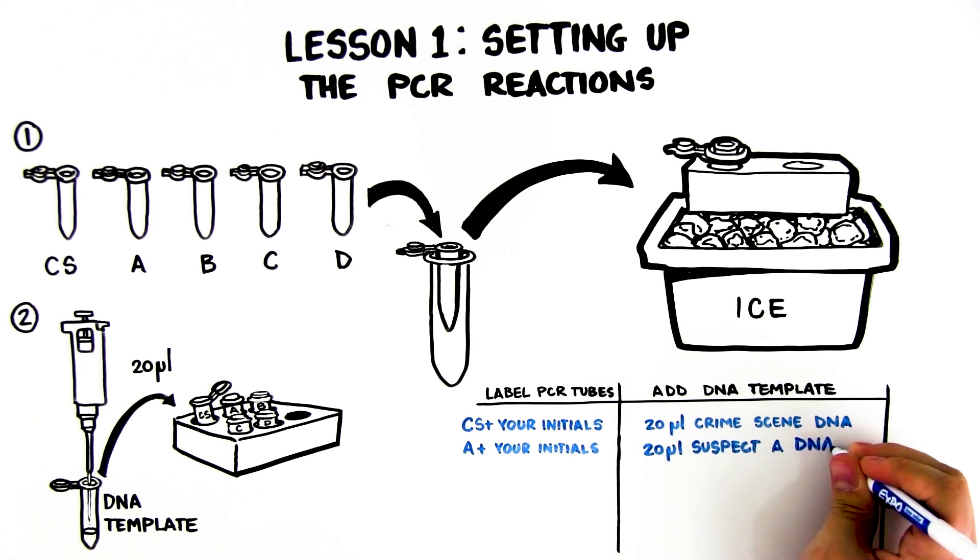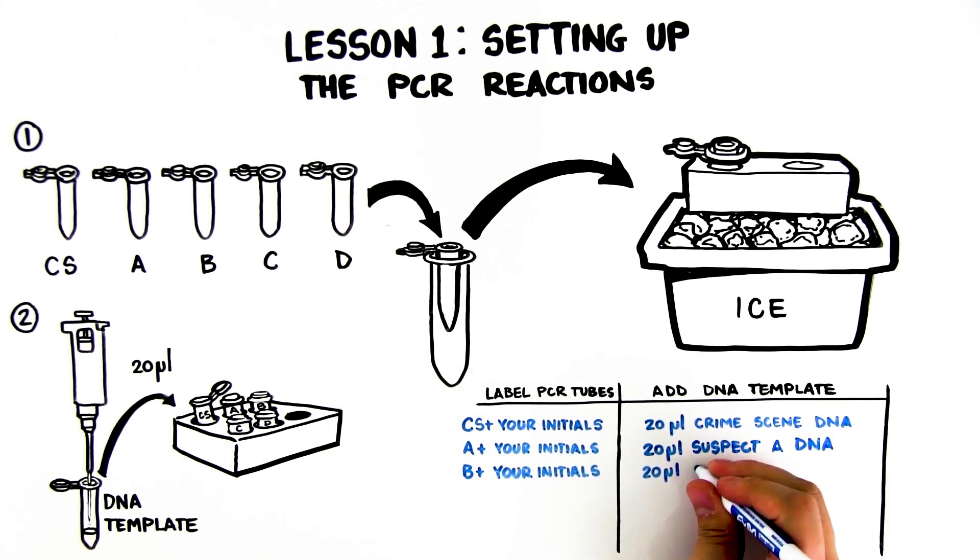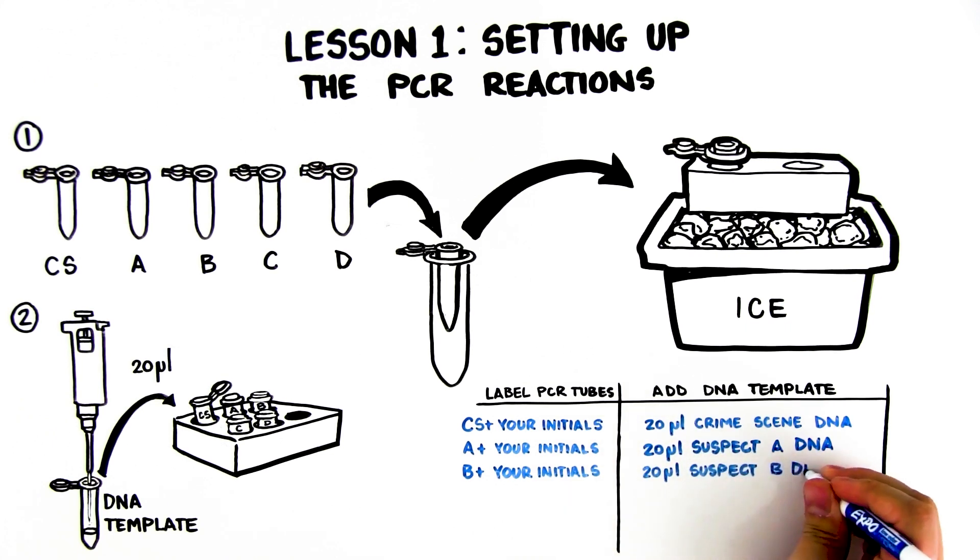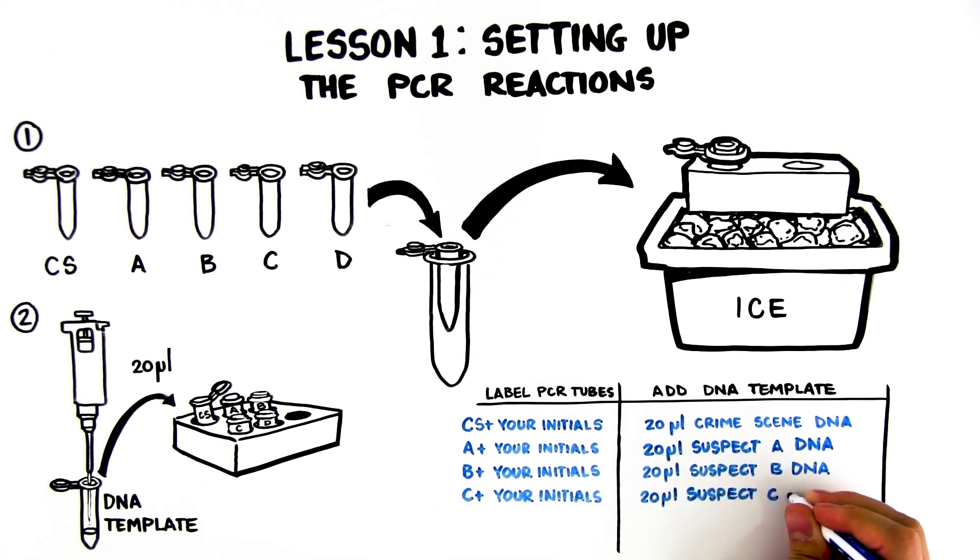In a PCR tube labeled B plus your initials, add 20 microliters suspect B DNA. In a PCR tube labeled C plus your initials, add 20 microliters suspect C DNA. In a PCR tube labeled D plus your initials, add 20 microliters suspect D DNA.